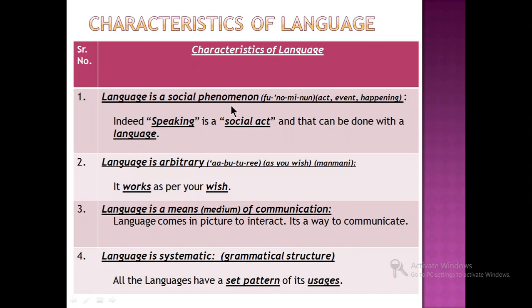The first characteristic of language is that language is a social phenomenon. It is a social happening — a natural event. Speaking is a social act, and that can be done with language. Whether you want to say something, listen, transfer something, or communicate something, ultimately a thing which comes into picture is called a language. So language is a social phenomenon is the first characteristic.